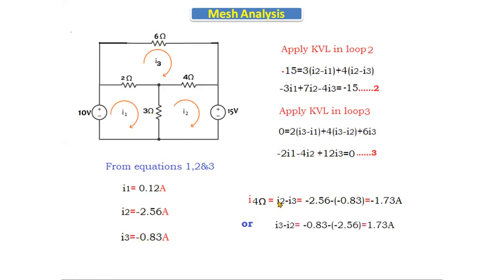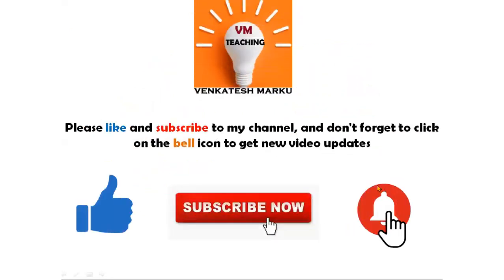So this is the procedure for three-loop circuits. We have seen how to write and apply KVL for mesh analysis with two loops and now with three loops — how to find individual loop currents and then the current through each resistor. This concludes today's session. In the next class we will discuss further topics.